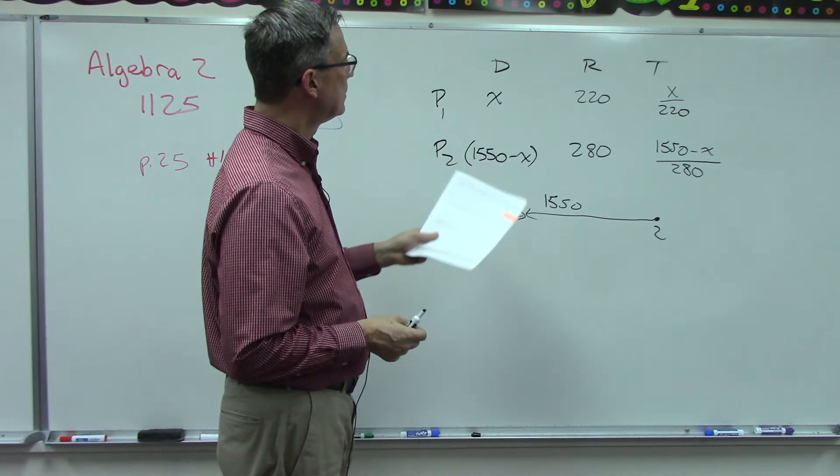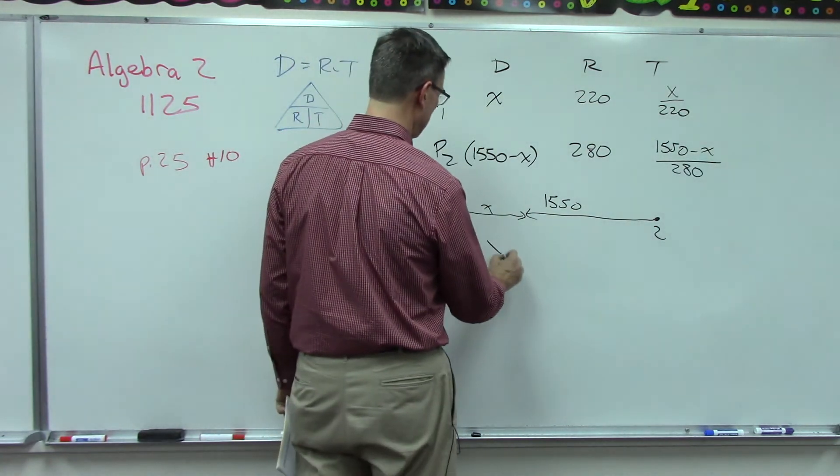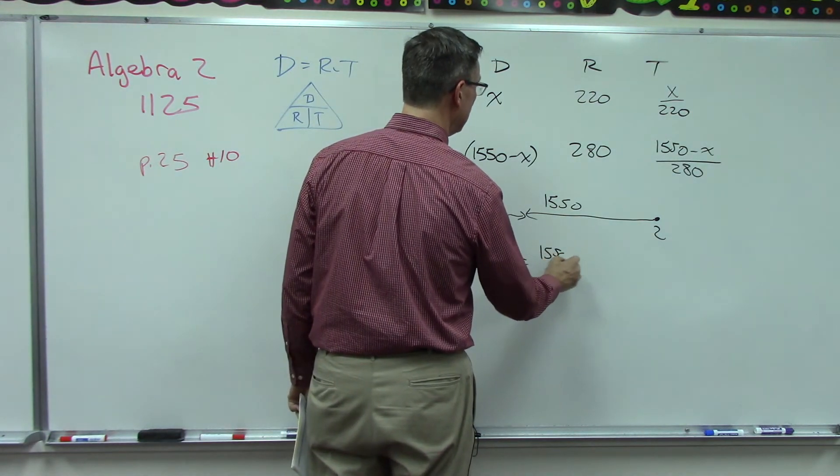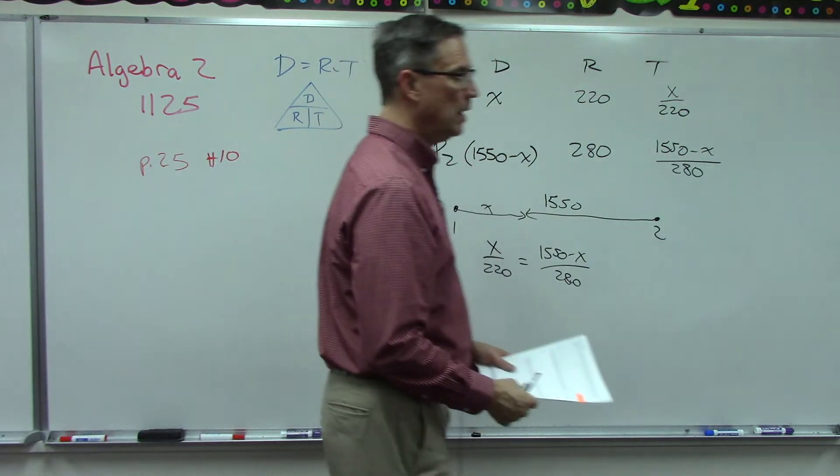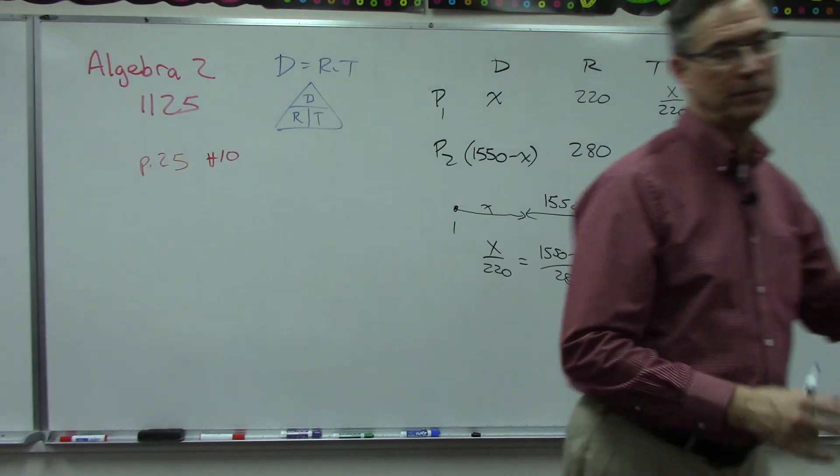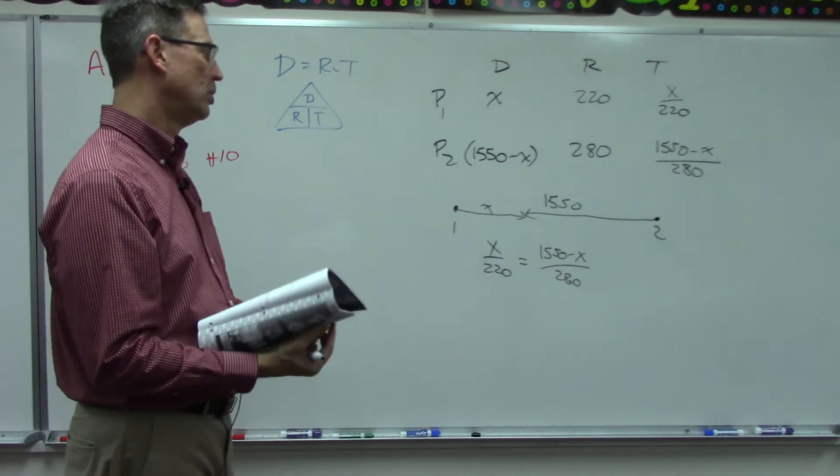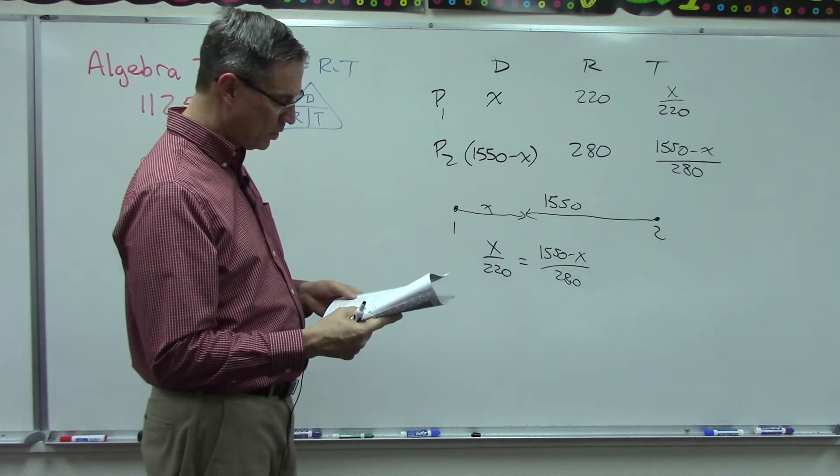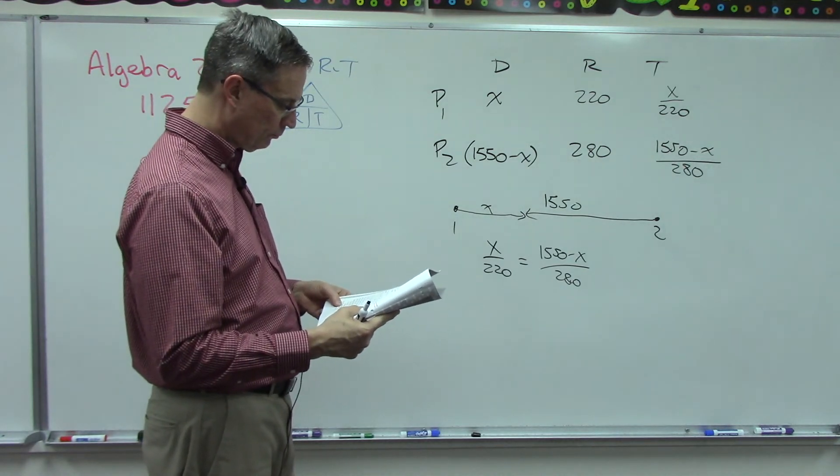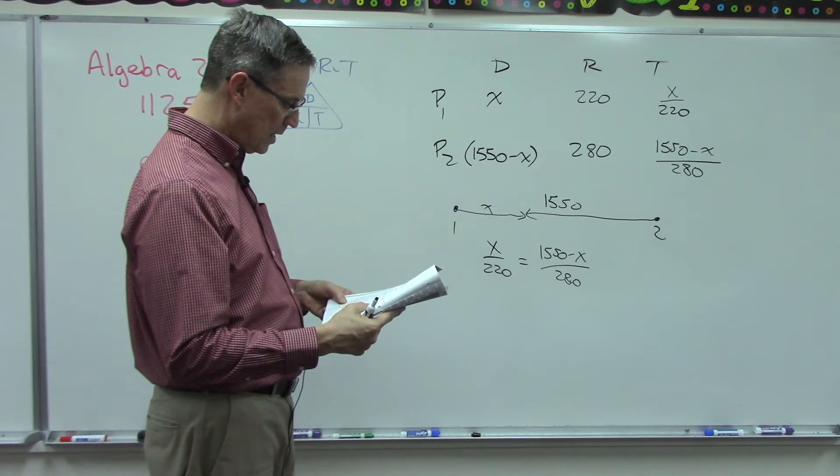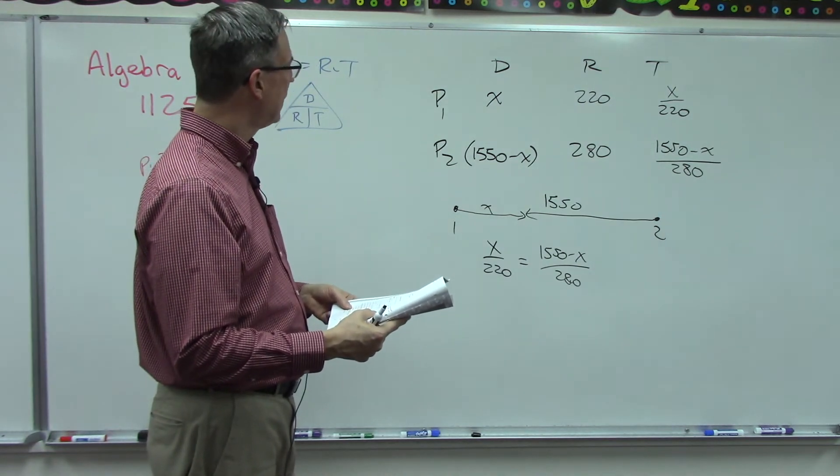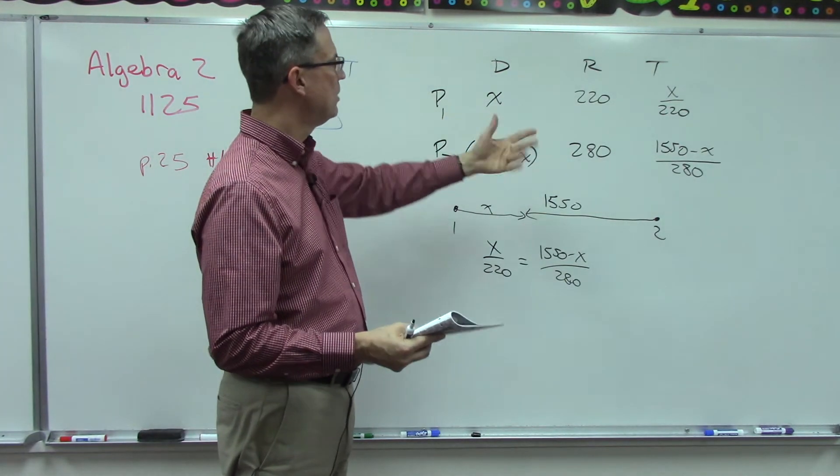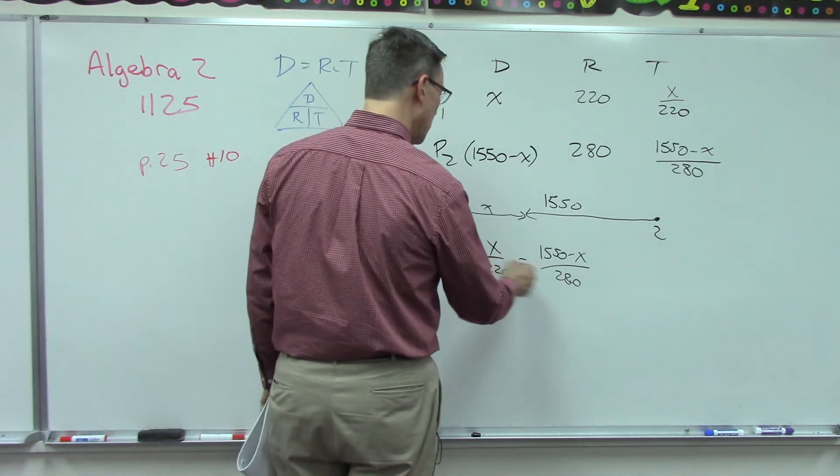Set these two equal to each other: x over 220 equals 1550 minus x over 280. Now you have to get a big common denominator. So we have to break down all the factors that make up 220, the factors that make up 280 and get this huge number which is 3080. That gives us an x value. In the score key they're using d here instead of x, but I used x.